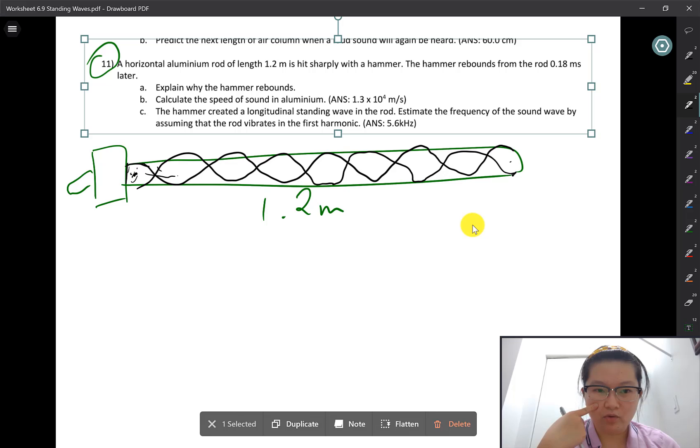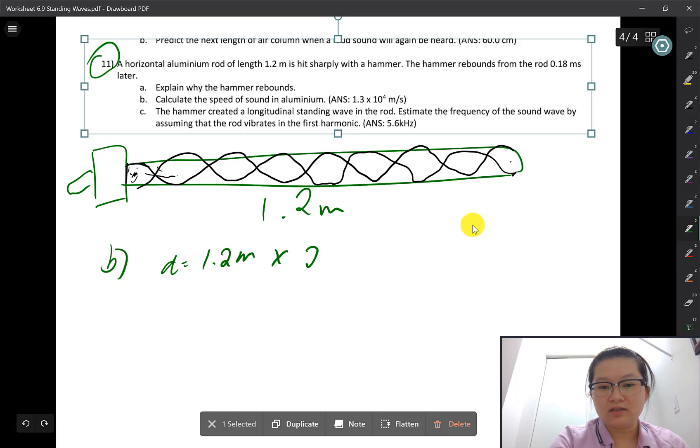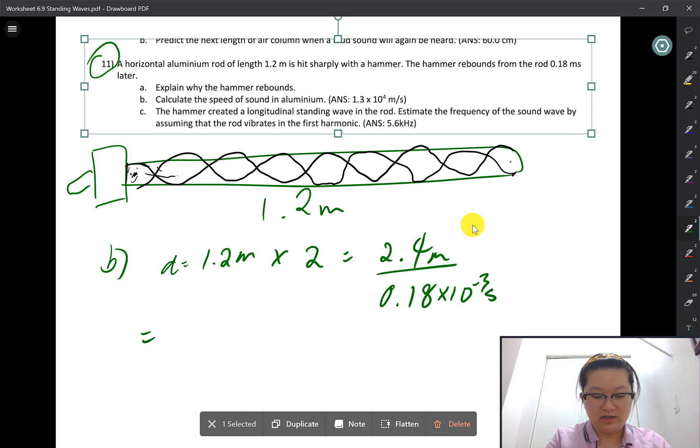Next up, question B: calculate the speed of sound in aluminum. The total length is 1.2 meters, but for the sound to go forward and come back, the total distance traveled is twice the length, so 2.4 meters. Divided by the time spent, which is 0.18 milliseconds or 0.18 times 10 to the negative three seconds. This gives 2.4 divided by 0.18.